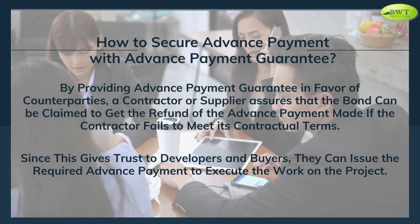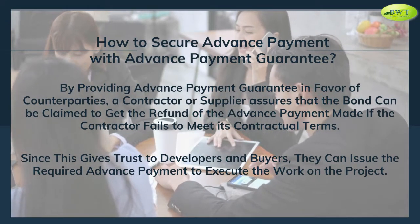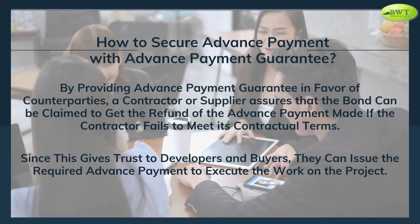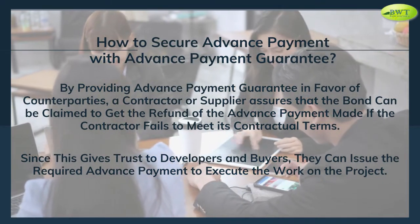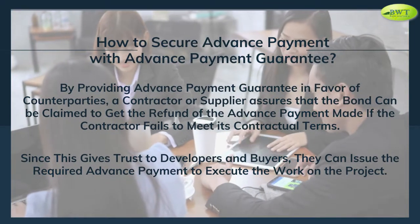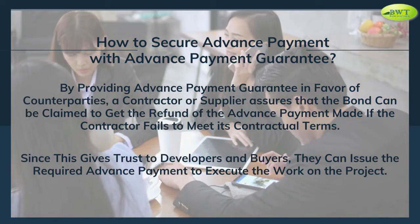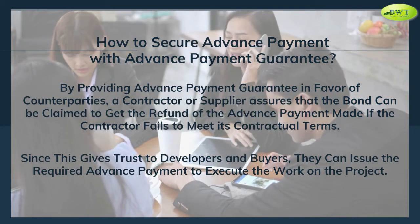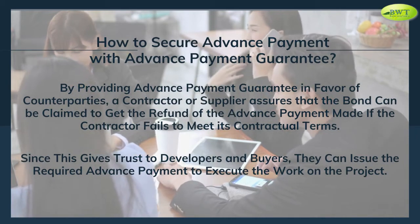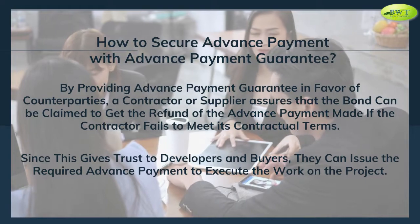How to secure Advance Payment with Advance Payment Guarantee: By providing an Advance Payment Guarantee in favor of counterparties, a contractor or supplier assures that the bond can be claimed to get a refund of the Advance Payment made if the contractor fails to meet its contractual terms. This gives trust to developers and buyers, allowing them to issue the required Advance Payment to execute the work on the project.